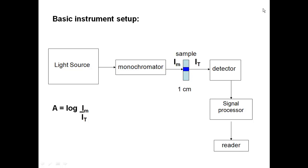Many setups are very similar to the one shown here. We have some light source that gives all the different wavelengths of light. That goes through something called a monochromator, which narrows down the wavelength to one single wavelength of light. Then we can measure that intensity of light before it goes to the sample.